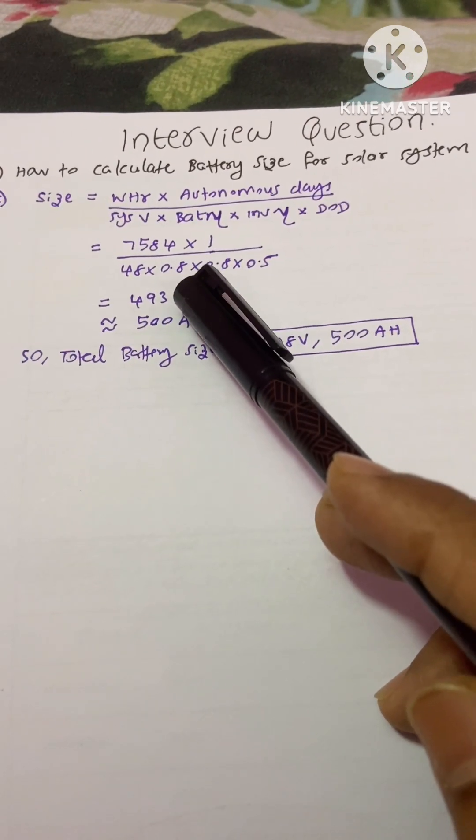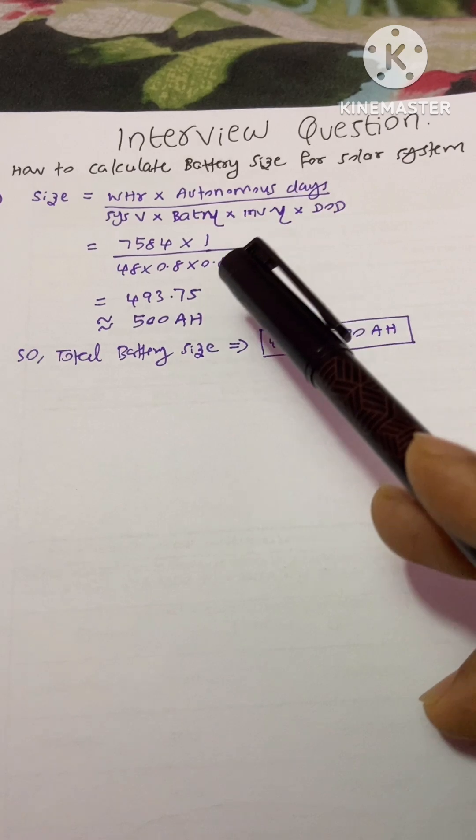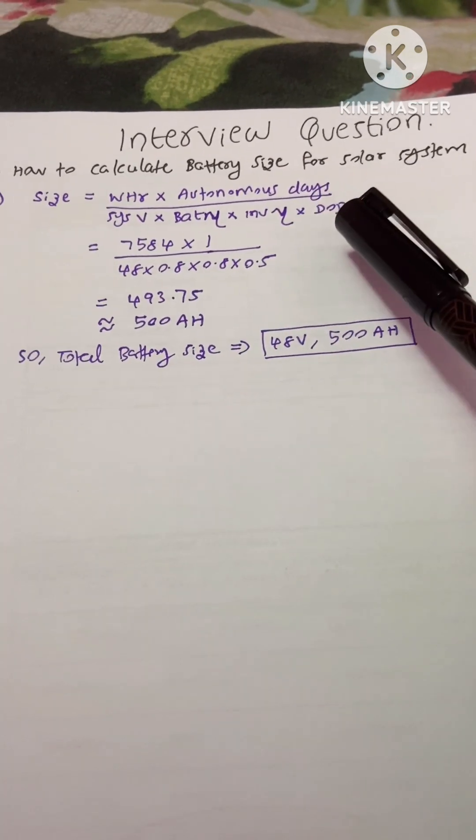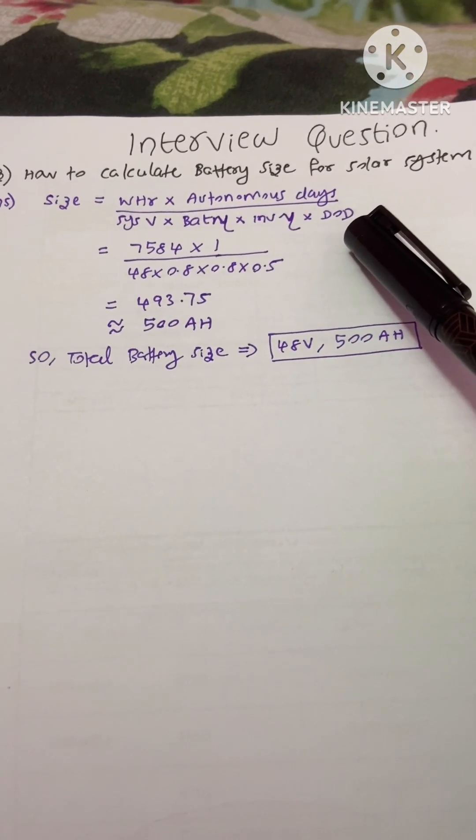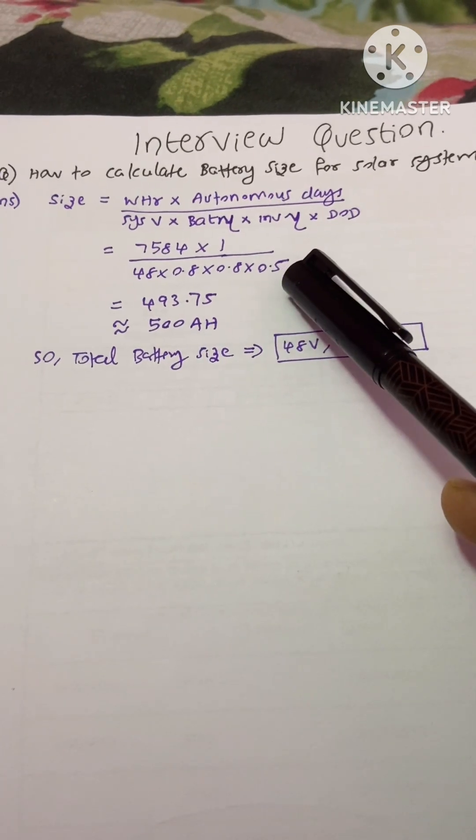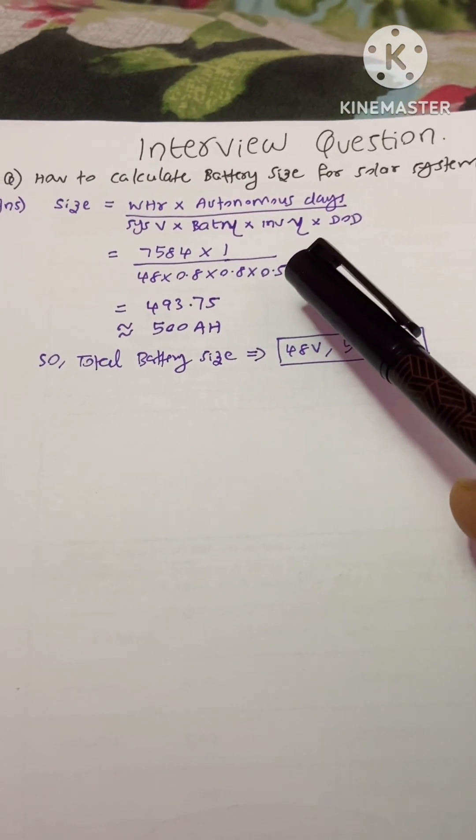Inverter efficiency is 0.8, that is 80 percent, and the depth of discharge of the battery I have taken here 50 percent, that means 0.5.